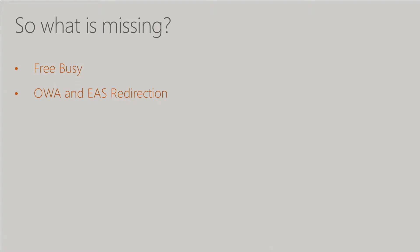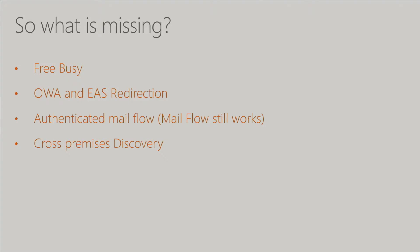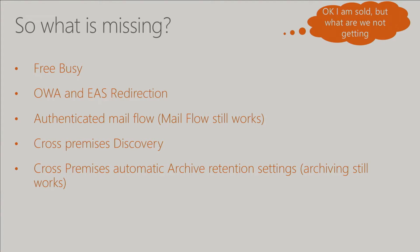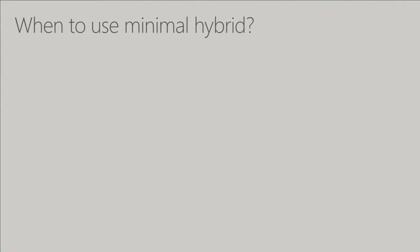What's missing? You don't get free/busy. You don't get OWA and ActiveSync redirection — those rely on organization relationships. You don't get authenticated mail flow. You would still get mail flow, but not authenticated mail flow. Cross-premises eDiscovery relies on OAuth, so you wouldn't be able to do a discovery search. And automatic retention for archives. If you were doing a quick migration, it probably wouldn't matter. If it does matter, do full hybrid — it's still an option.